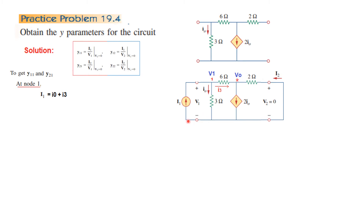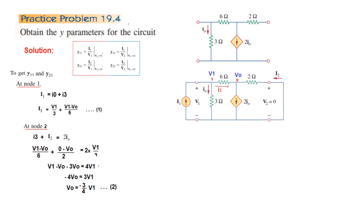At node 1, I1 is entering and I0 and I3 are leaving, so we write: I1 = I0 + I3. Converting to voltage terms: I0 goes from V1 to the reference point (0), so I0 = V1/3. The current I3 goes from V1 to V0, so I3 = (V1 − V0)/6. This is equation number 1 at node 1.